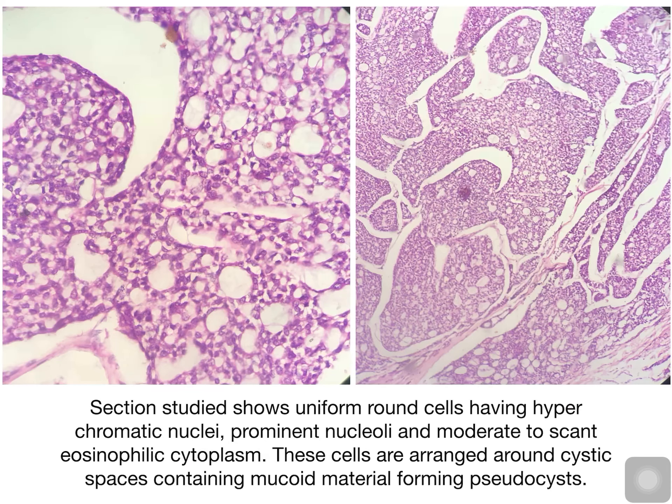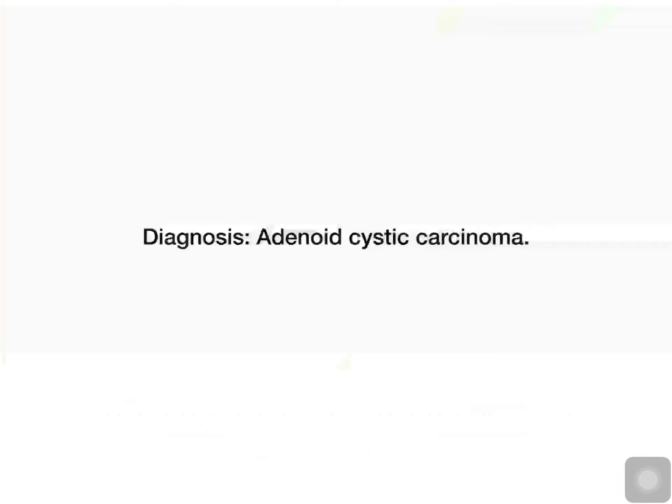Section study shows uniform round cells having hyperchromatic nuclei, prominent nucleoli, and moderate to scant eosinophilic cytoplasm. These cells are arranged around cystic spaces containing mucoid material forming pseudocysts. My diagnosis is adenoid cystic carcinoma of the salivary gland.